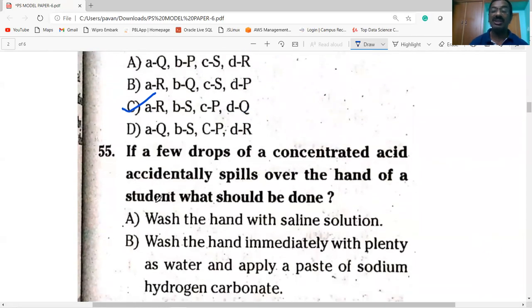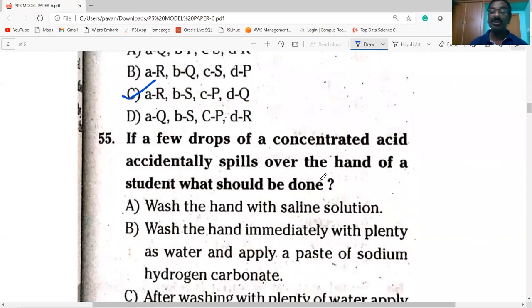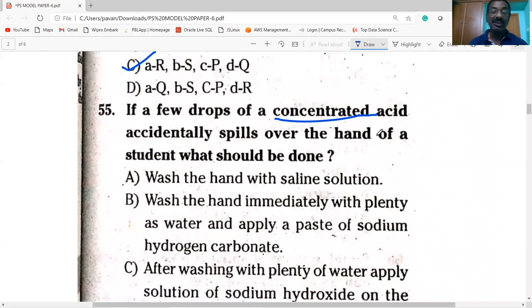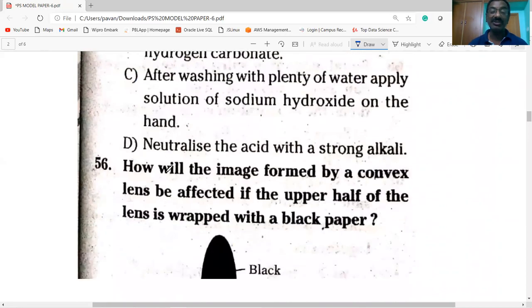Next question. If a few drops of concentrated acid accidentally spills over the hand of a student, what should be done? Washing the hand with saline solution is wrong. Wash the hand immediately with plenty of water, then apply a paste of sodium hydrogen carbonate. Option B is correct.